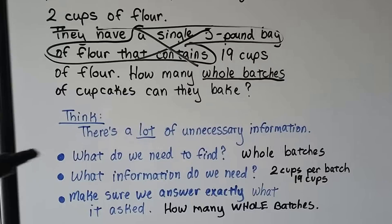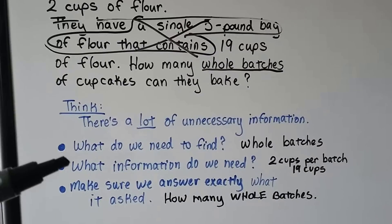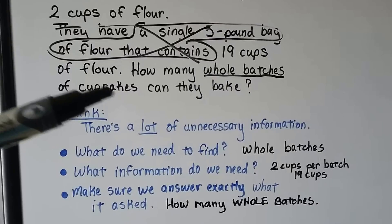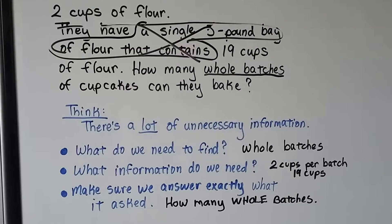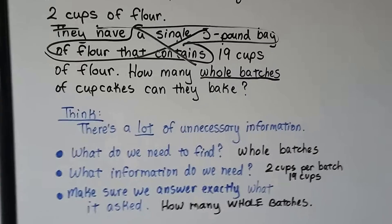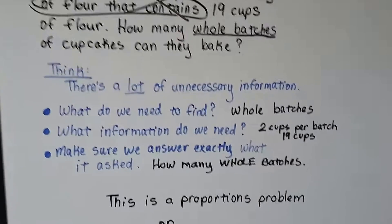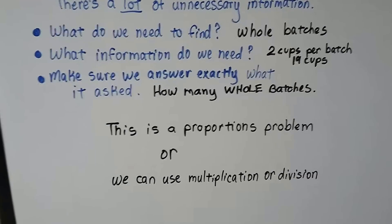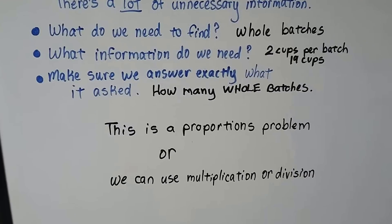So what do we need to find? We need to find the whole batches. What information do we need? That it takes two cups for each batch and they have 19 cups. We need to make sure we answer exactly what it asked. How many whole batches? So this is either a proportions problem or we can just use multiplication or division, whichever is easiest and gets you the right answer.